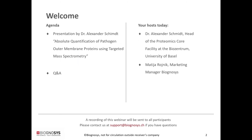Dr. Schmidt graduated from the University of Erlangen-Nuremberg in 2001 and received his PhD in Biochemistry in 2006, working at the Max Planck Institute of Biochemistry. After his PhD, he joined the group of Rudi Ebersold at ETH Zurich as a postdoc and developed sensitive targeted mass spectrometric approaches for biomarker discovery and absolute quantification of proteins and their modifications.